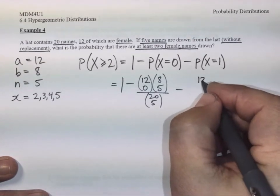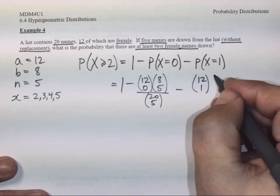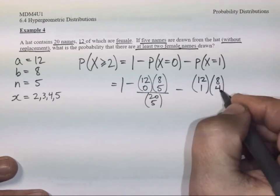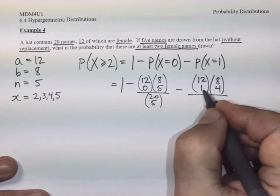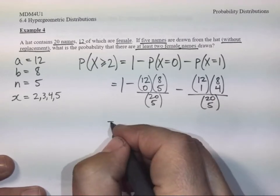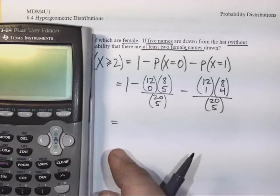Subtract if we wanted one female name, exactly one female name drawn, then that means out of 12 we must have chosen one female name out of the hat. Out of 8 male names, we must have chosen four names out of the hat. 1 plus 4 is 5, and out of 20 choose 5, that did not change.